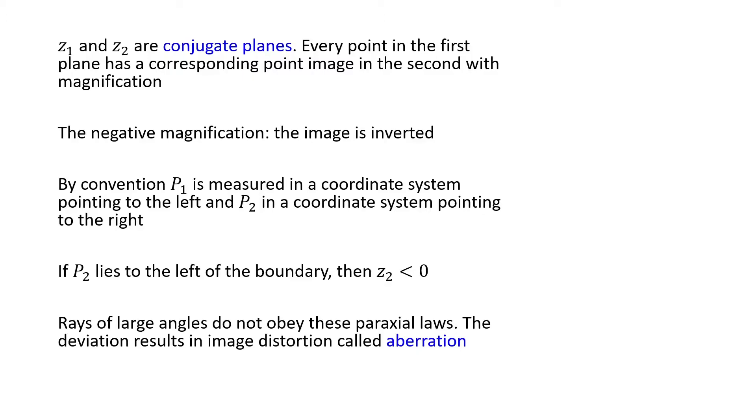Rays of large angles do not obey these paraxial laws. The deviation results in the image is called aberration.